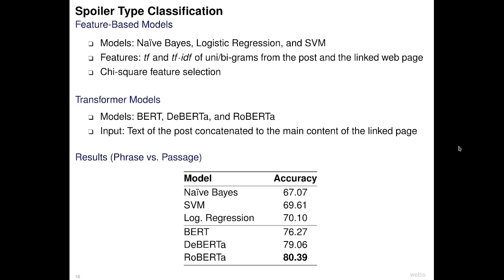Here we see the results for the classification of phrase versus passage spoilers. Logistic Regression is the best feature-based approach with an accuracy of 70%. All transformer models achieve higher accuracy, and RoBERTa achieves the highest accuracy of 80% for spoiler type classification.